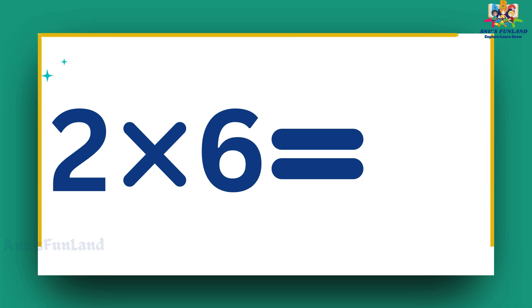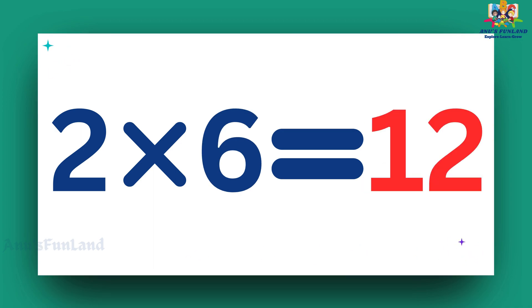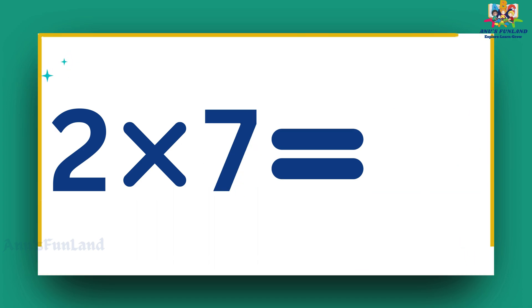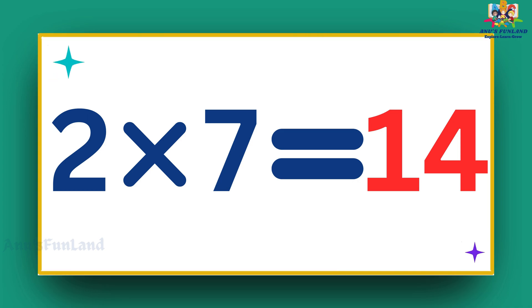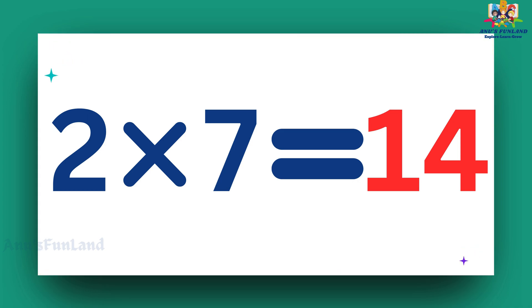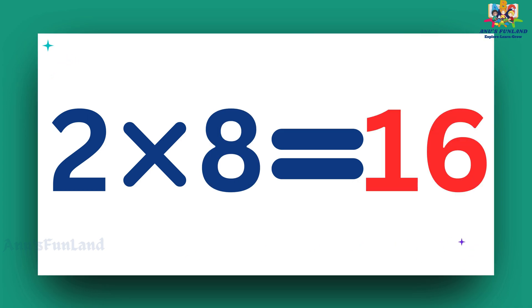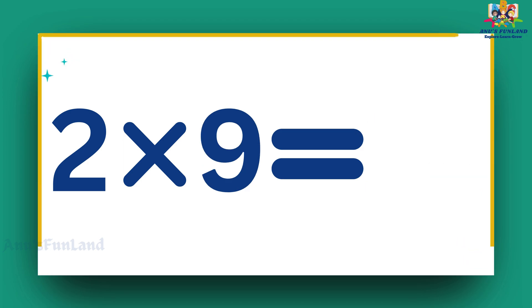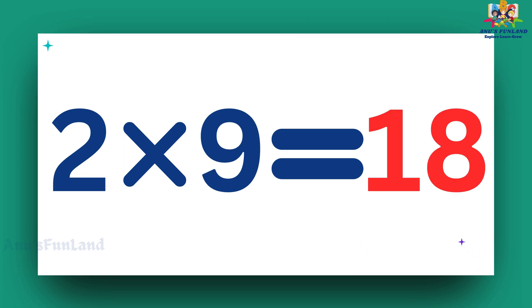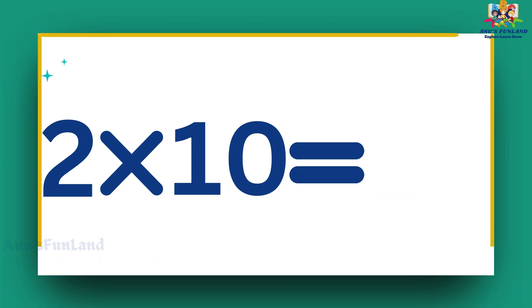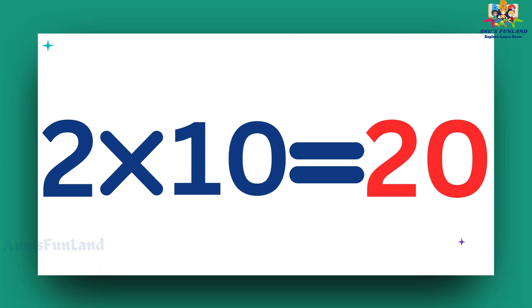Two sixes are twelve. Two sevens are fourteen. Two eights are sixteen. Two nines are eighteen. Two tens are twenty.